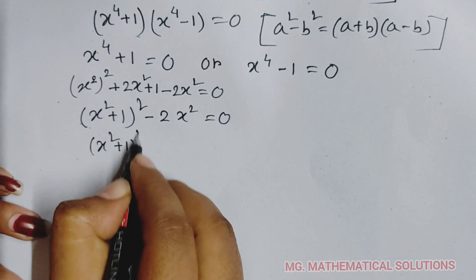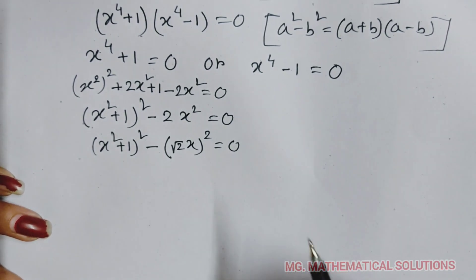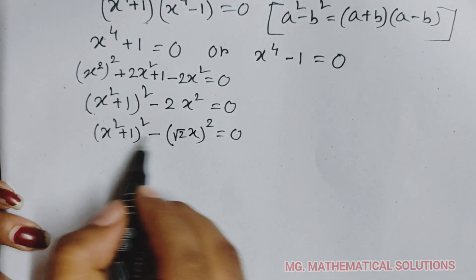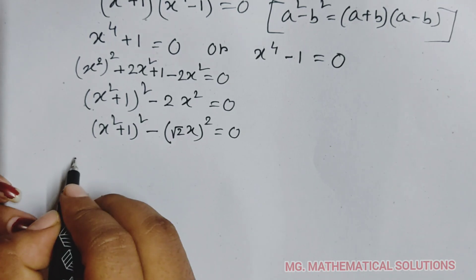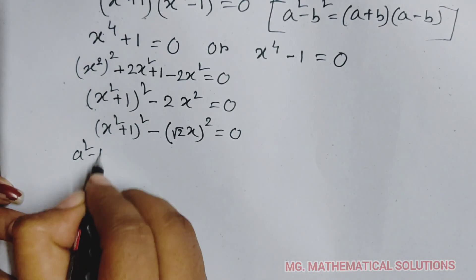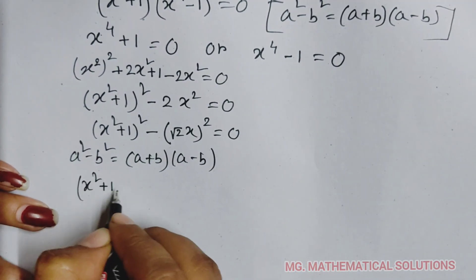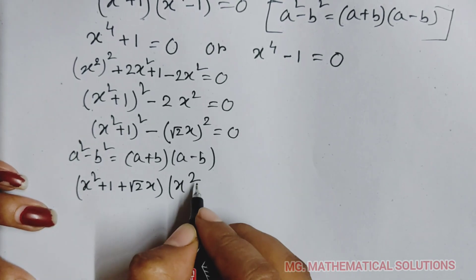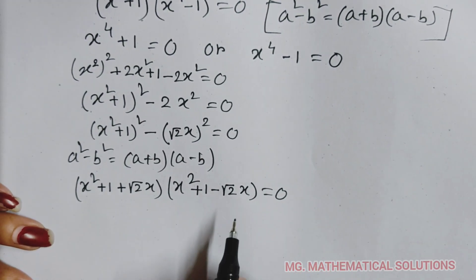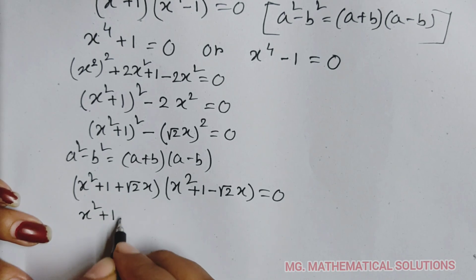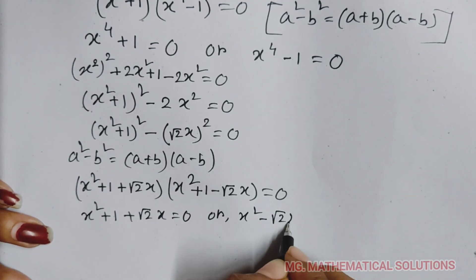We can write this as x squared plus 1 whole squared minus root 2 into x whole squared equal to 0. Now we use the a squared minus b squared formula again, where a equal to x squared plus 1 and b equal to root 2 into x. So, x squared plus 1 plus root 2x whole into x squared plus 1 minus root 2x equal to 0. Either this term equals 0 or this term equals 0, giving x squared plus root 2x plus 1 equal to 0 or x squared minus root 2x plus 1 equal to 0.